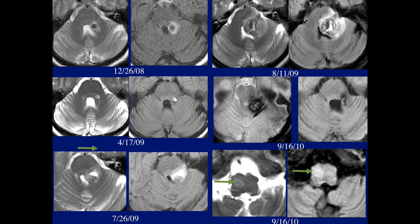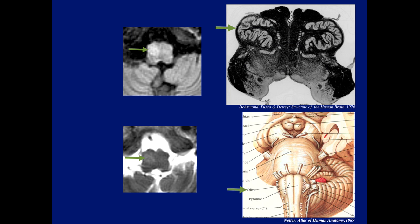Here's another image. I'd like to get a response from the fellows who are watching: what structure am I pointing at? Stefan answered that I'm pointing to the olive in the medulla. Here's a histological, anatomic picture of the olive. The olive sits posterolateral to the pyramid — the corticospinal tracts.